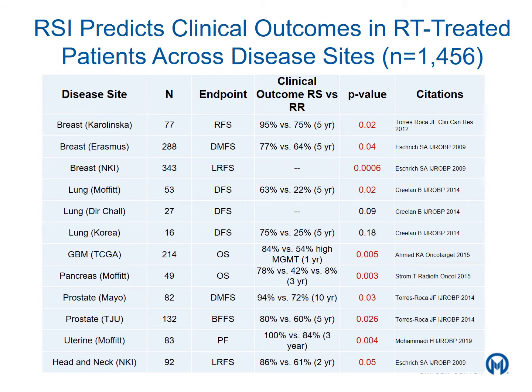Since the initial validation studies, the radiosensitivity index has been locked into place and validated in multiple cancer types across multiple institutions with multiple endpoints. The radiosensitivity index has predicted clinical outcomes in patients treated with radiation therapy in over 1,400 patients. It has been specifically validated in tumor types such as breast cancer, lung cancer, glioblastoma, pancreas, prostate, uterine, and head and neck tumors.